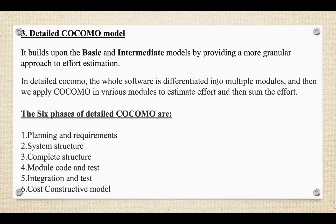The third type is the Detailed COCOMO model, an extended version of the Intermediate COCOMO model. It offers a more refined approach to estimating effort, time, and cost by incorporating additional phases of development and more detailed cost drivers. Detailed COCOMO allows for greater precision by evaluating each phase of the software development process separately and applying different effort multipliers to each phase. The six phases of Detailed COCOMO are: planning and requirements, system structure, complete structure, module code and test, integration and test, and cost constructive model.